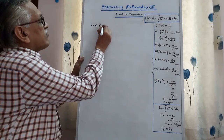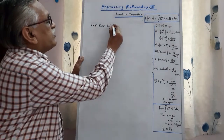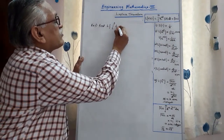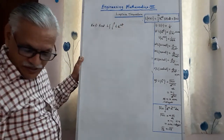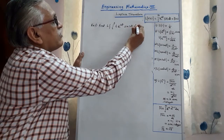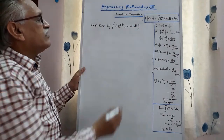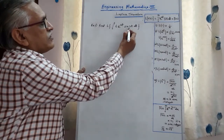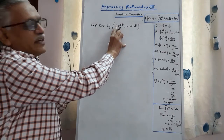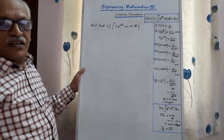Find the Laplace transform of the integral from 0 to t of t·e^(-2t)·sin(3t) dt. To decide the order, we go from right to left: first find the Laplace of sin(3t), then apply the multiplication by t theorem, then the first shifting theorem, and finally the Laplace of integral — these four steps.